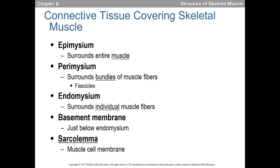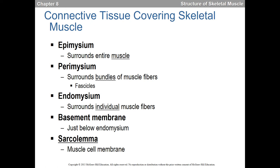When looking at skeletal muscle structure, there are terms we need to know: epimysium, perimysium, and endomysium - respectively the outermost, more internal, and nearest to the muscle fiber layers. We also have a basement membrane just below the endomysium. One important term is sarcolemma, which simply means the muscle cell membrane - the phospholipid bilayer surrounding the muscle cell.